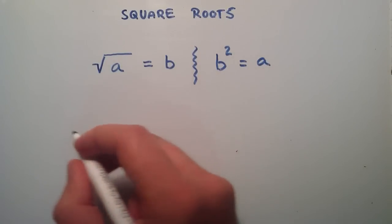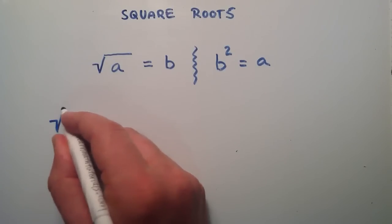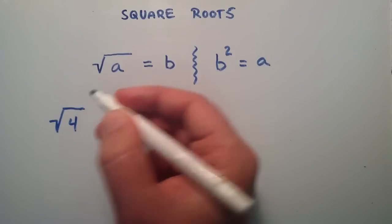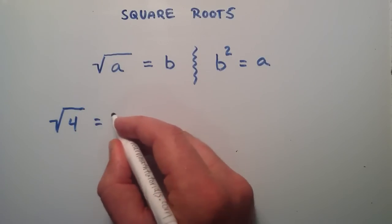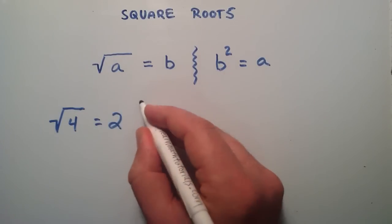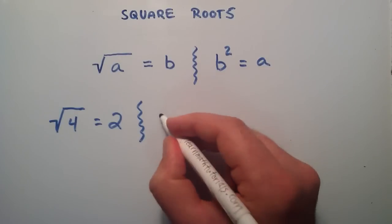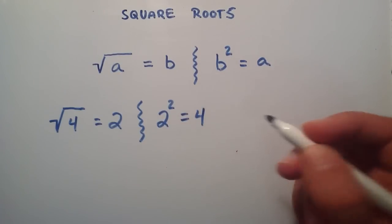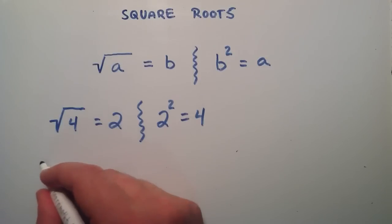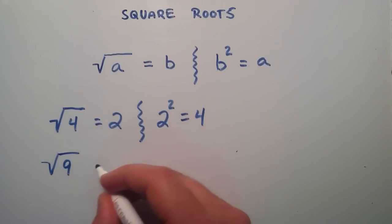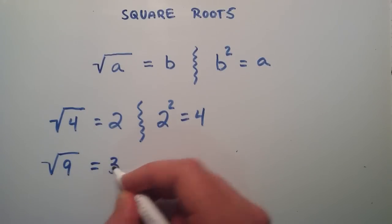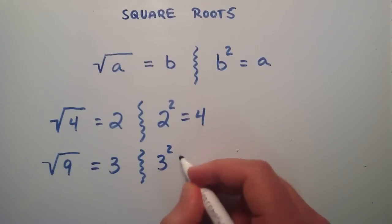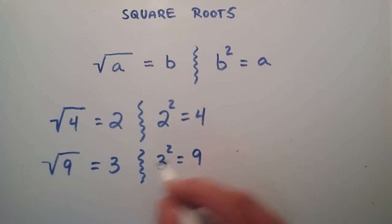For example, if we have the square root of 4, we can say that the square root of 4 equals 2, and the reason why is because 2 raised to the second power is equal to 4. Another example, if we have the square root of 9, we can say that equals 3. The reason why is because 3 squared brings us back to 9.